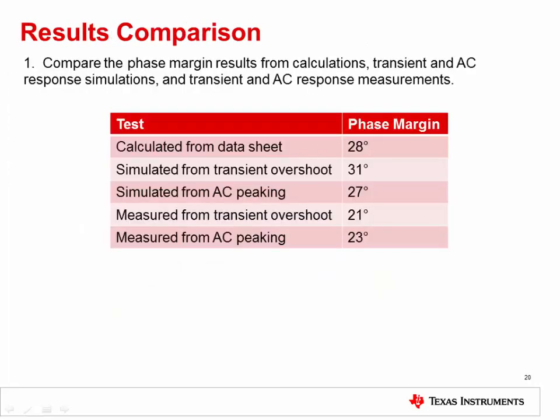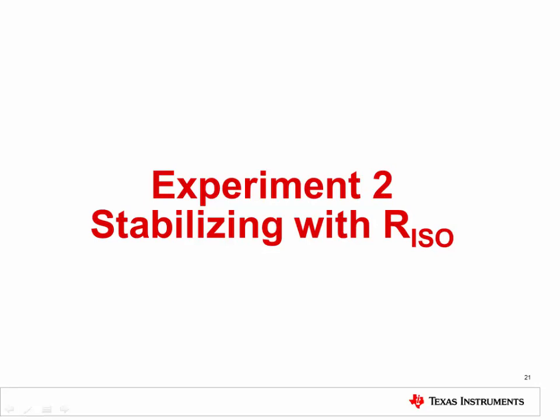Now compare the phase margin results from your hand calculations, transient and AC response simulations, and transient and AC response measurements. While there is some slight variation to the results, the phase margin values compare very well at approximately 27 degrees. In Experiment 2, we'll use an isolation resistor to increase the phase margin of the circuit from Experiment 1 and therefore improve its stability.